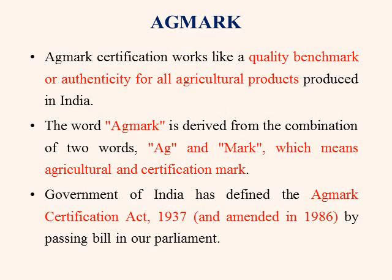AGMARK is an abbreviation of Agriculture Marketing. It is a quality certification mark under the Central Agriculture Produce or Grading and Marketing Act of 1937. The word AGMARK is derived from the combination of two words, AG and Mark — AG means agriculture and Mark means certification. The Government of India defined the AGMARK Certification Act in 1937, and the same act was amended in 1986 by passing a bill in parliament.